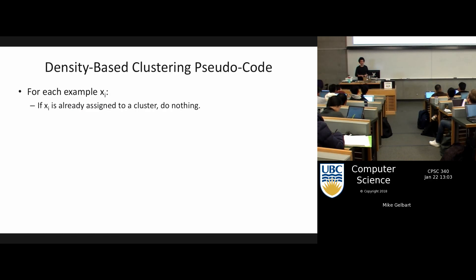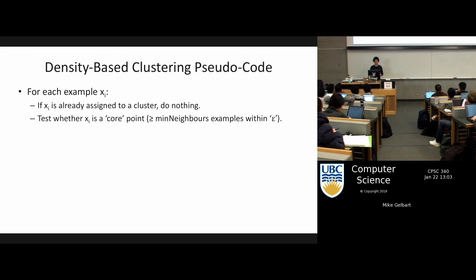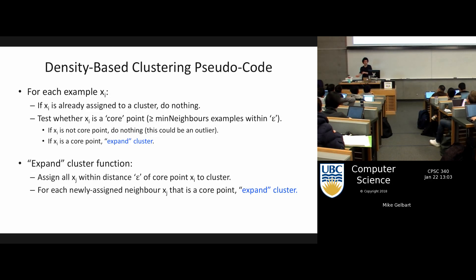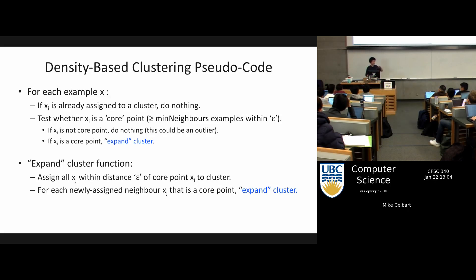The pseudocode is: for each example or point xi, if it's already in a cluster that's fine. First you want to see whether you're a core point, which means checking how many neighbors you have — is that greater than the threshold? If you're a core point you're going to expand the cluster from that point. Everything within epsilon of that point becomes part of the cluster, and then you iteratively apply this, growing outward. If the nearby point is also core you keep adding from there; if it's nearby but not core, meaning there's not enough density around it, you add it but then stop there.